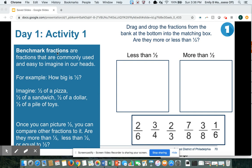Benchmark fractions are fractions that are really easy. We just kind of know what they look like. One half is probably the most common and easiest benchmark fraction. I don't even have to use a number line or fraction strips. I just know how big half is. I can easily picture what half of a pizza looks like in my head or half of a sandwich.